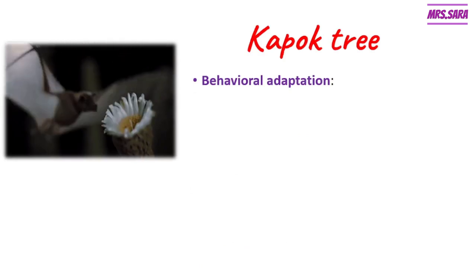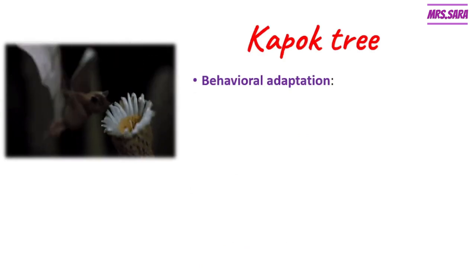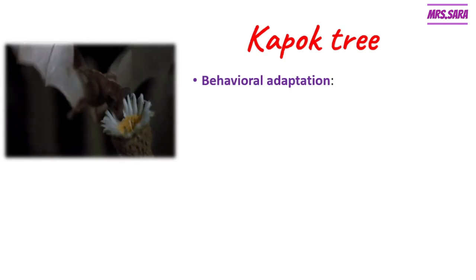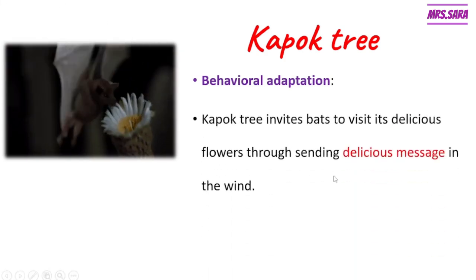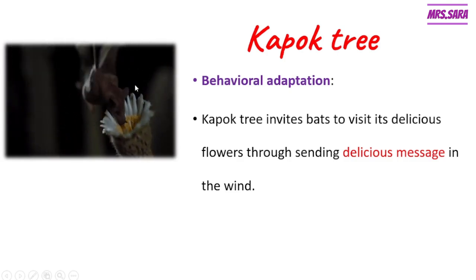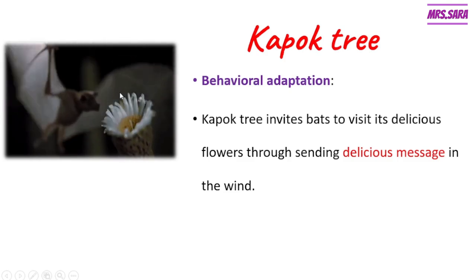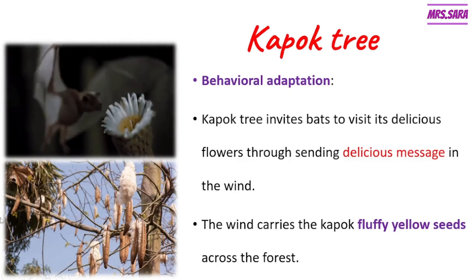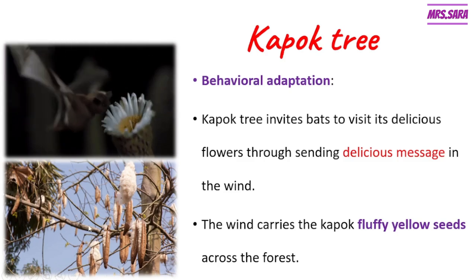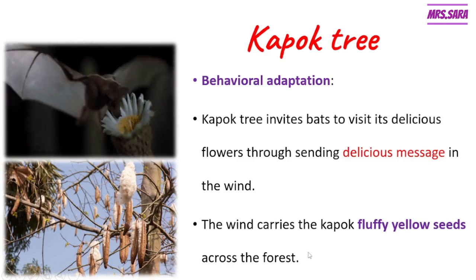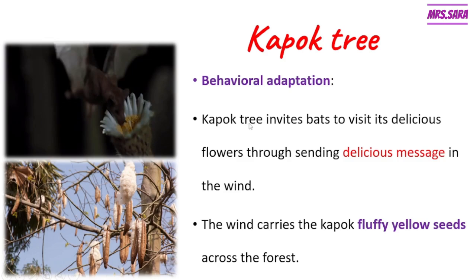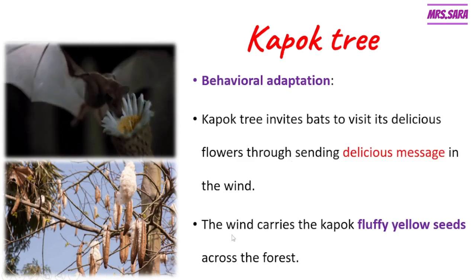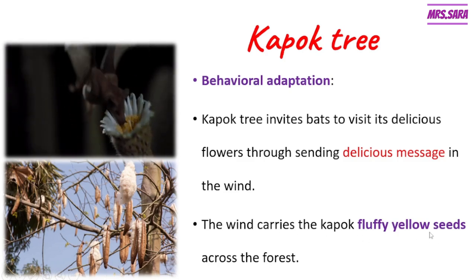Now we're going to talk about the behavioral adaptation of kapok tree. Unlike acacia tree which produces poison and sends smelly messages, kapok tree sends delicious messages to invite pets — insects and animals — to visit its delicious flowers. Also, the seeds of kapok tree are fluffy and yellow, and are carried by the wind across the forest. So the behavioral adaptation of kapok tree is inviting insects through delicious messages in the wind, and its fluffy yellow seeds are carried by the wind across the forest.